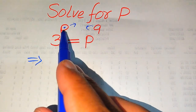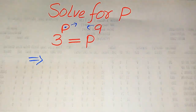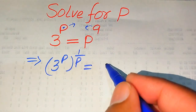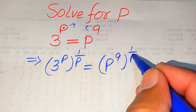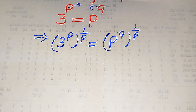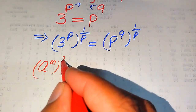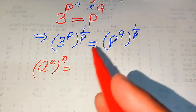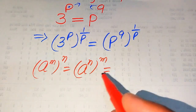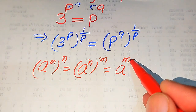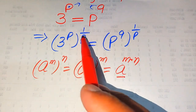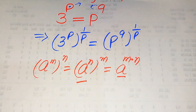First, we move the variable term p to the right-hand side. For this we take the p-th root on both sides, or in other words we take the 1-over-p power on both sides. When we take the 1-over-p power on both sides it is written as p to the power of 9, whole raised to the power of 1 over p. We then use the exponential law: a to the power of m to the power of n equals a to the power of m times n. On the left-hand side we multiply the two exponents, and on the right-hand side we interchange the two exponents.